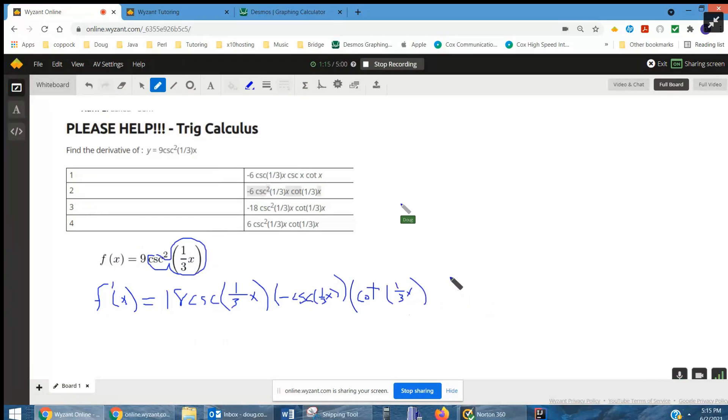But now we have to apply the chain rule again. We take the derivative of this inside function, which is one-third. If we multiply the constants together—18, negative 1, and one-third—that's negative 6.